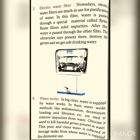Water works: in big cities, water is supplied from water works. In these water works, methods like sedimentation, decantation, loading, and filtration are used to remove impurities. Chlorine is used to kill harmful germs present in water. This pure clean water is collected in storage tanks from where it is supplied for domestic use. हमने sedimentation, decantation, loading, और filter का process पढ़ा — साथ ही chlorine powder का use किया जाता है जिससे harmful bacteria destroy होती हैं, फिर पानी को storage tank में safe किया जाता है और supply दी जाती है।